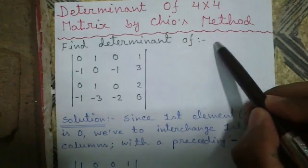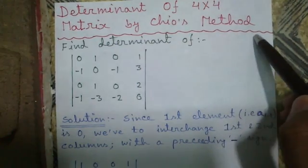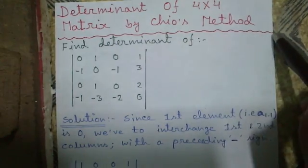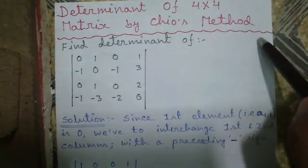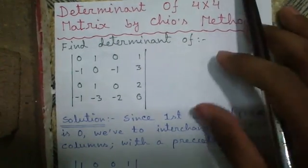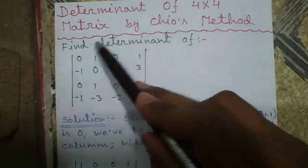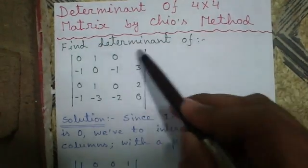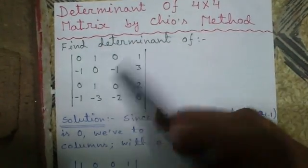It can be applied to matrices such as 3 cross 3, 4 cross 4, 5 cross 5, and that is up to n cross n. Our question is to find the determinant of a 4 cross 4 matrix.